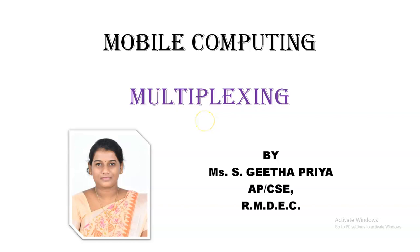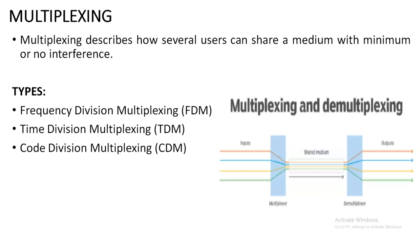Hello everyone, this is Geeta Priya from RMD Engineering College. In this lecture we will be discussing multiplexing from mobile computing. Multiplexing is combining multiple signals together — it may be analog or digital signals. The multiple signals are combined together to share a common medium, and all the signals travel through the same medium to reach the destination.